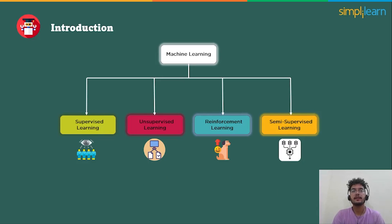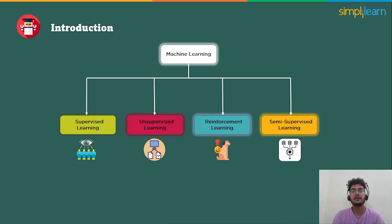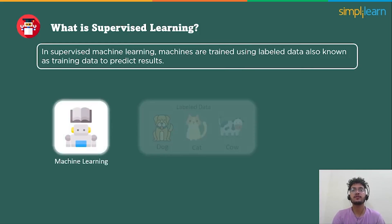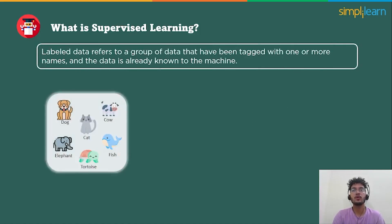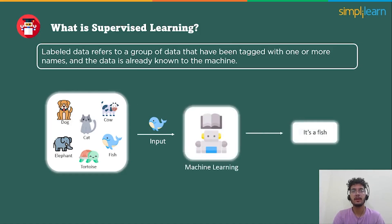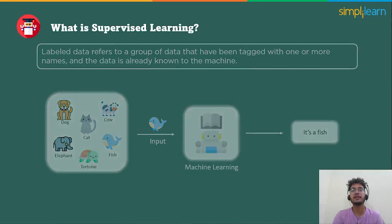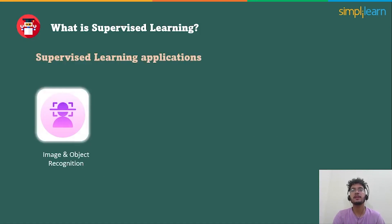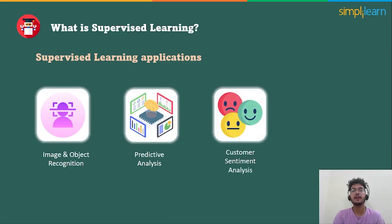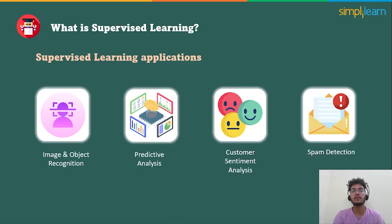In supervised machine learning, machines are trained using labeled data, also known as training data, to predict the results. Labeled data refers to a group of data that have been tagged with one or more names, and data is already known to the machine. In the real world, supervised machine learning can be used for image and object recognition, predictive analytics, customer sentiment analysis, spam detection, and many more.